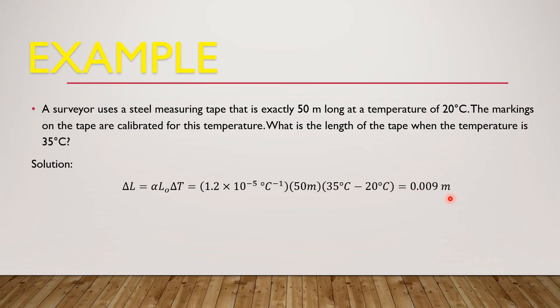It basically means that you need to calculate the new length of the tape. This is the change in length, and from this we can solve for the new length. Since the change in length equals the final or new length minus its initial length which is 50 meters, using algebra, the new length L = delta L plus L_0, and that is equal to 50.009 meters. So that's thermal expansion, that's linear thermal expansion.